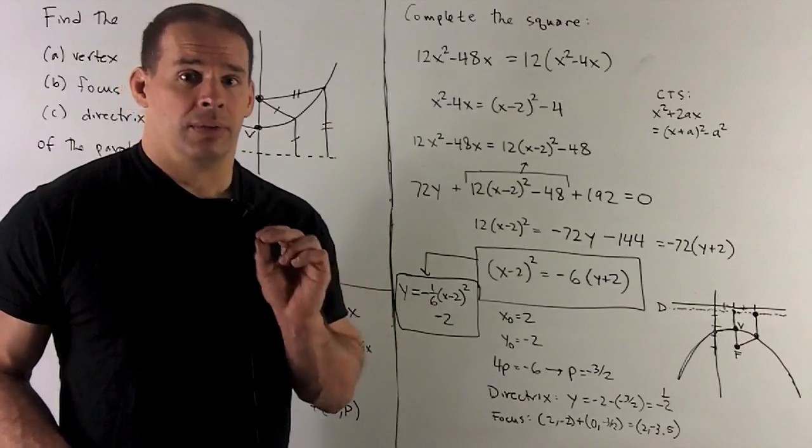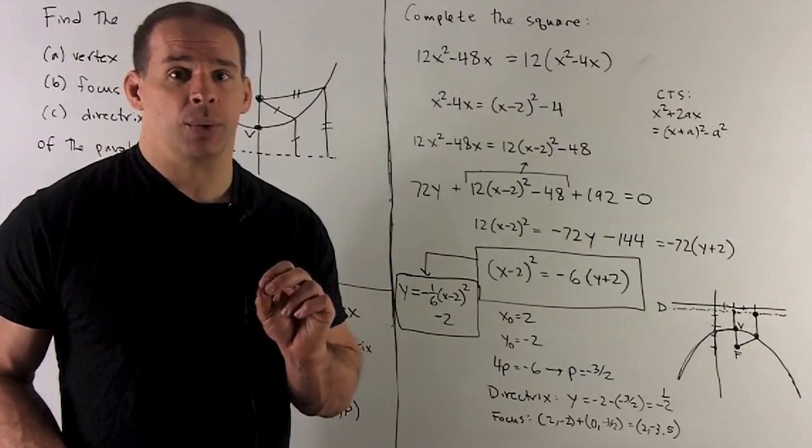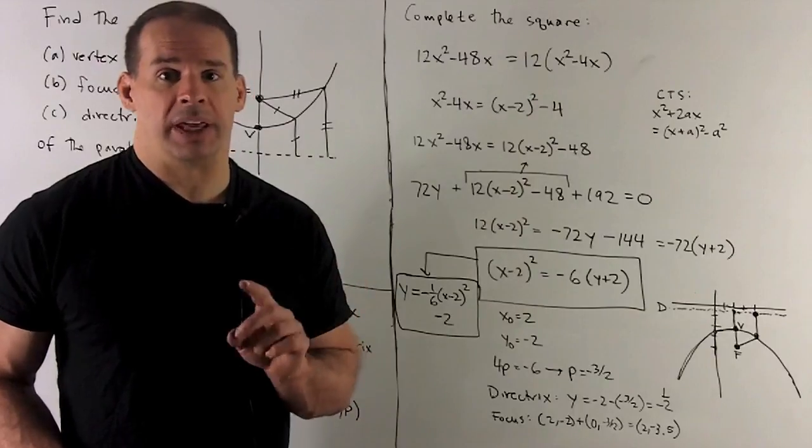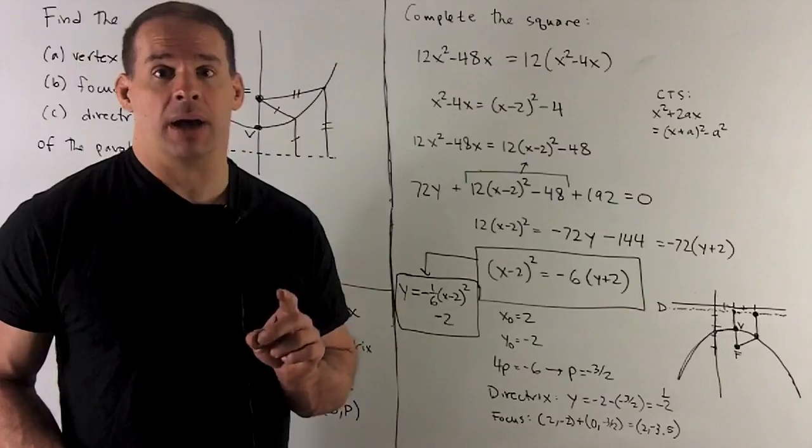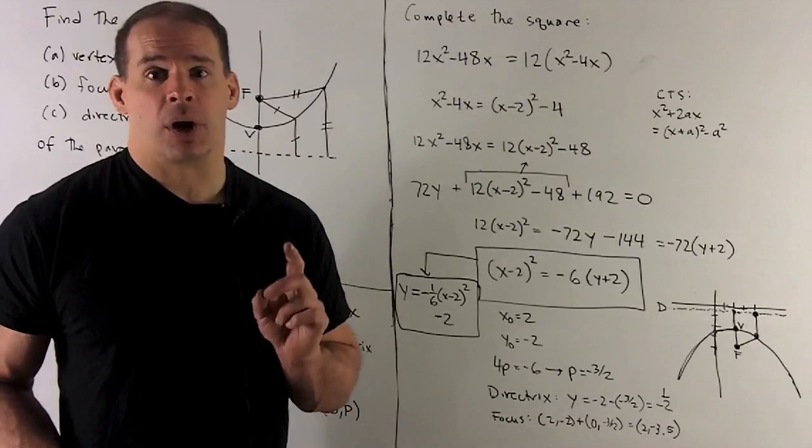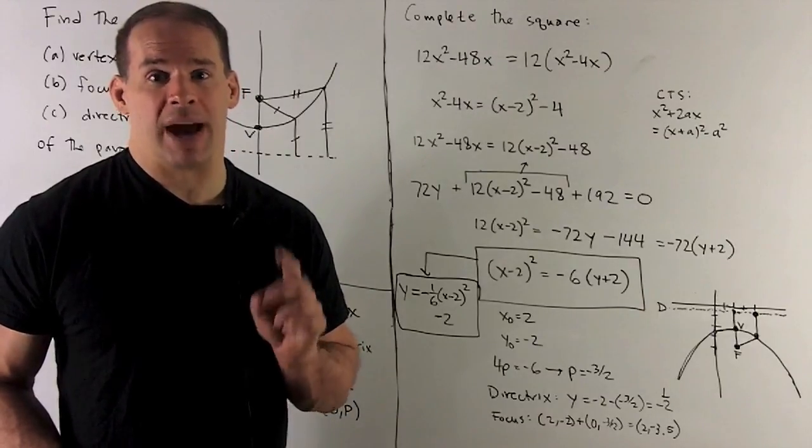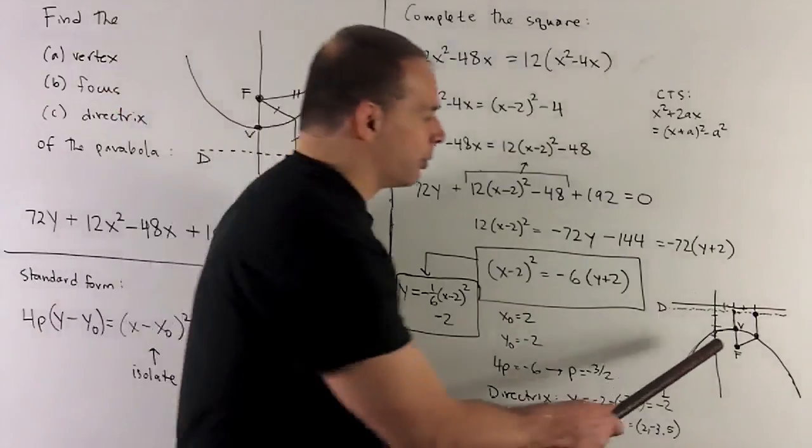To get the point for our focus, we just add (0, P). So, that's the same as adding (0, -3/2). So, our focus is at (2, -3.5). That's the point right there.